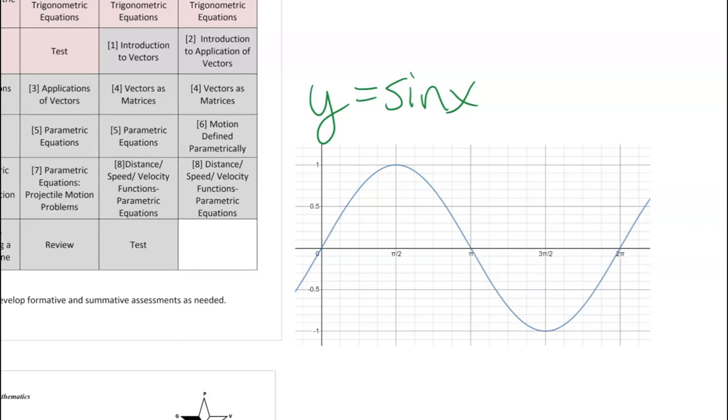We see that sine of x in that situation is starting at the ordered pair (0, 0), and then one full cycle of sine of x goes to 2π, and then it repeats. We're very familiar with what the graph of y equals sine or y equals cosine looks like.